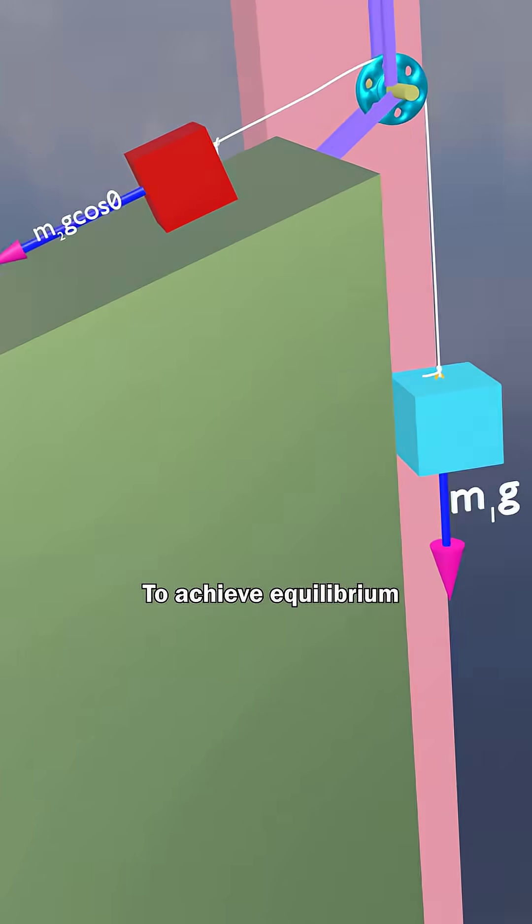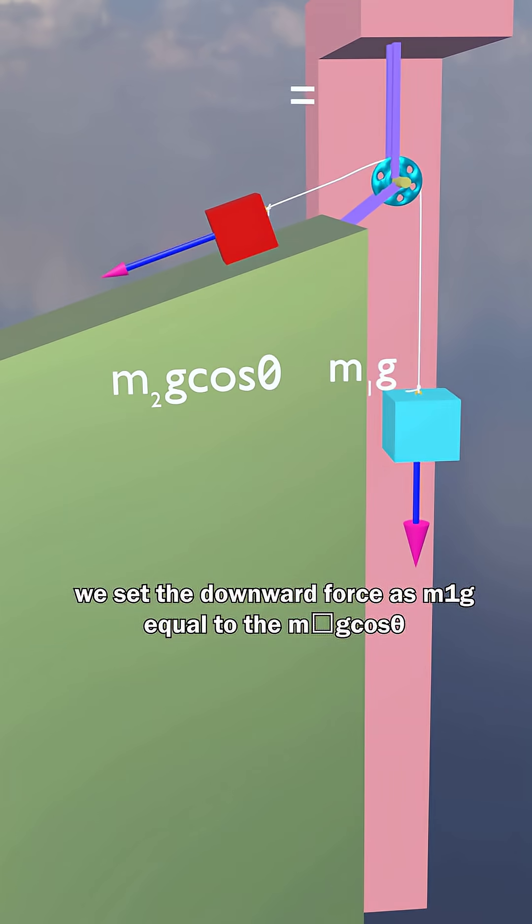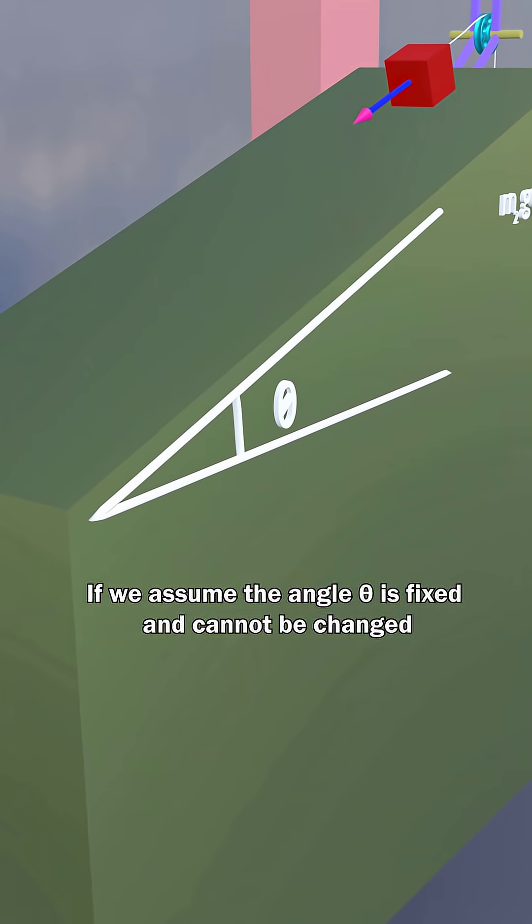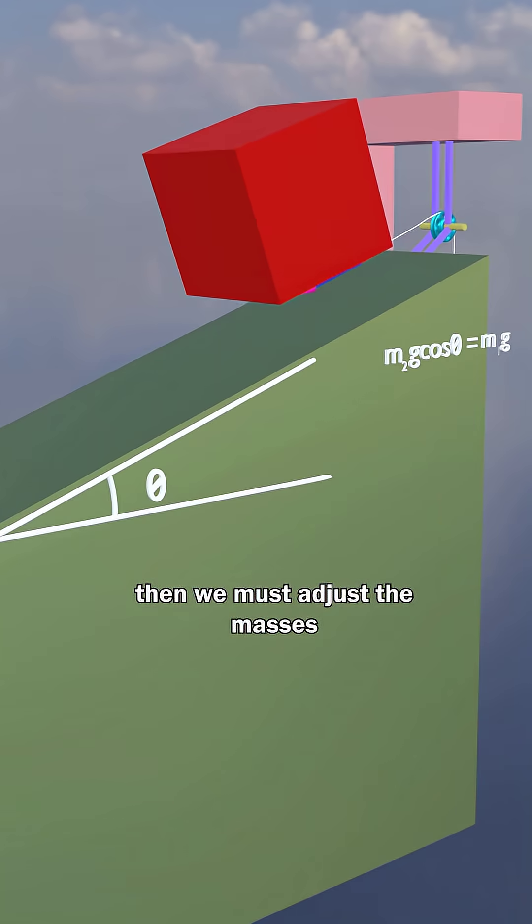To achieve equilibrium, we set the downward force m1g equal to m2g cos theta. If we assume the angle theta is fixed and cannot be changed, then we must adjust the masses.